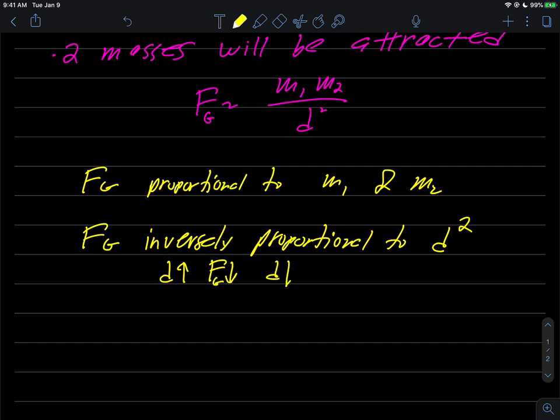And as d goes down, like if you somehow made the objects get closer together, the force of gravity then would go up. Okay, so that's definitely what inversely proportional means.